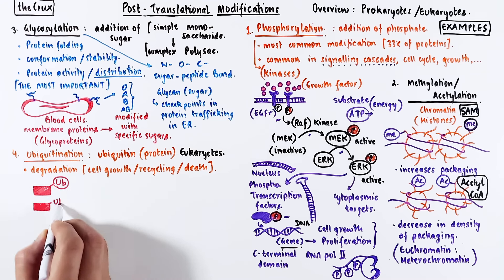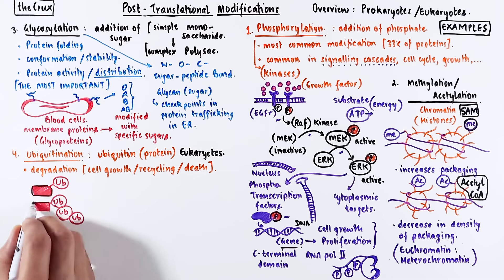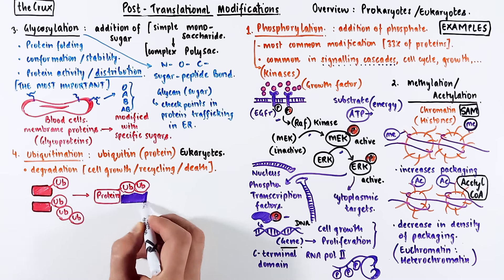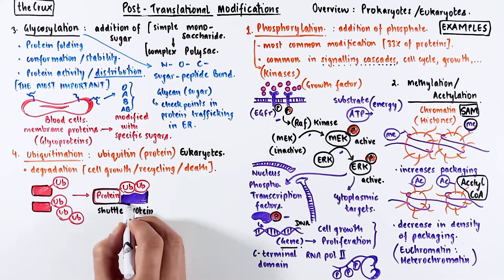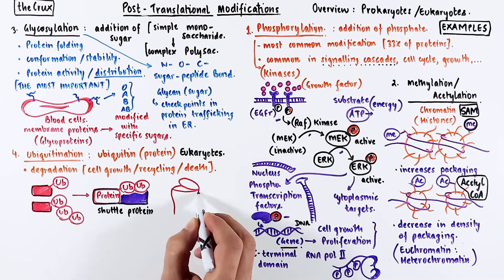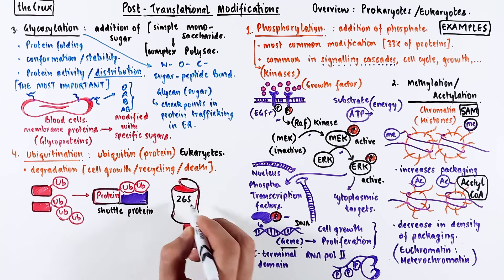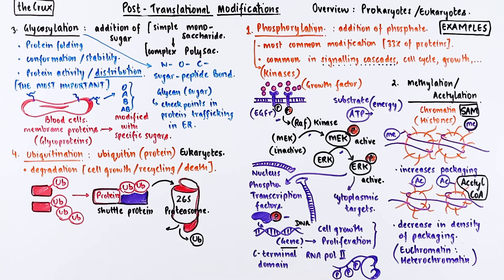Then a shuttle protein comes in, attaches to it, and takes it away for degradation. The destination is a proteosome, which looks like a cylindrical trash can where proteins enter from one side and bits and pieces of shredded protein come out the other end. Ubiquitin is usually not degraded and is recycled.